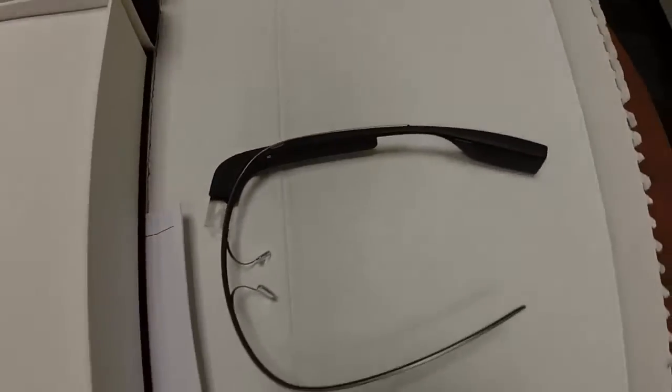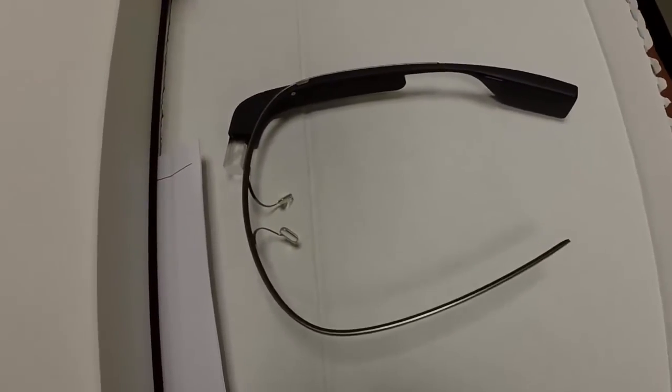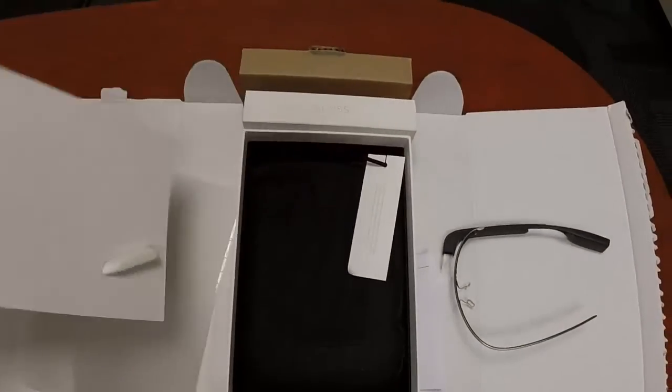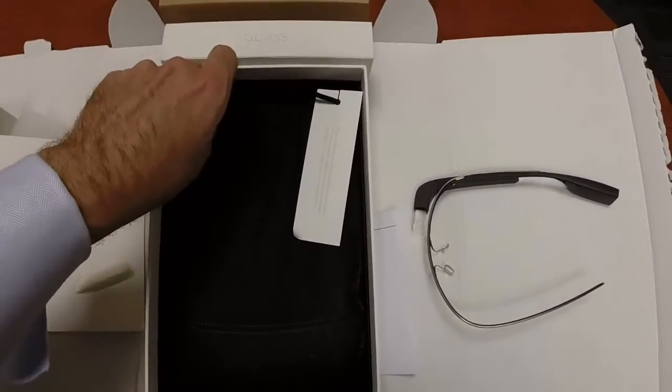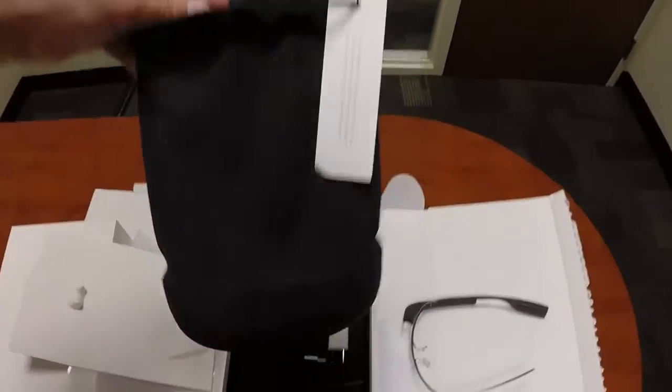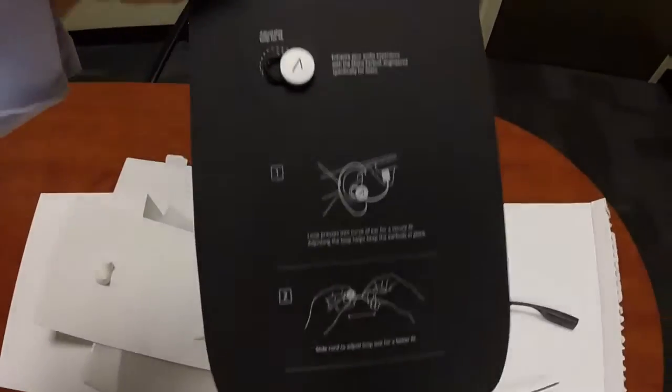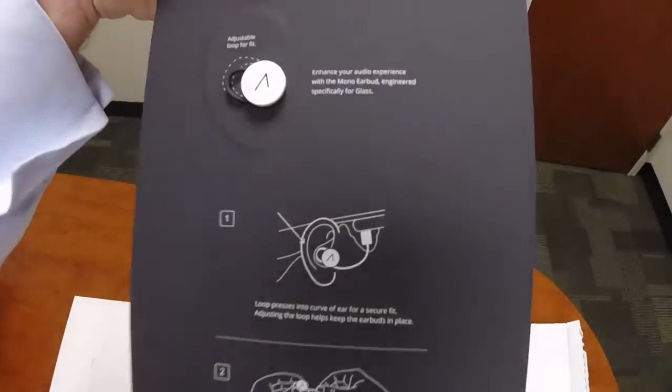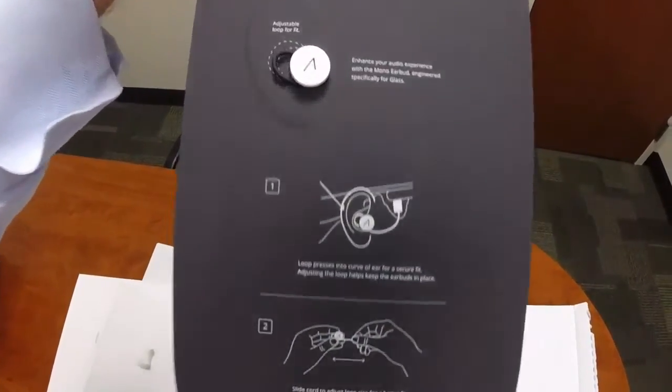All right. So, that is the Google Glass itself. Let's see what's underneath. Pull this out. And it looks like you have a bag, probably to hold it. And there's something inside. This is the earpiece. So, if you want an extra earbud, it allows you to actually get a little bit of that going on.